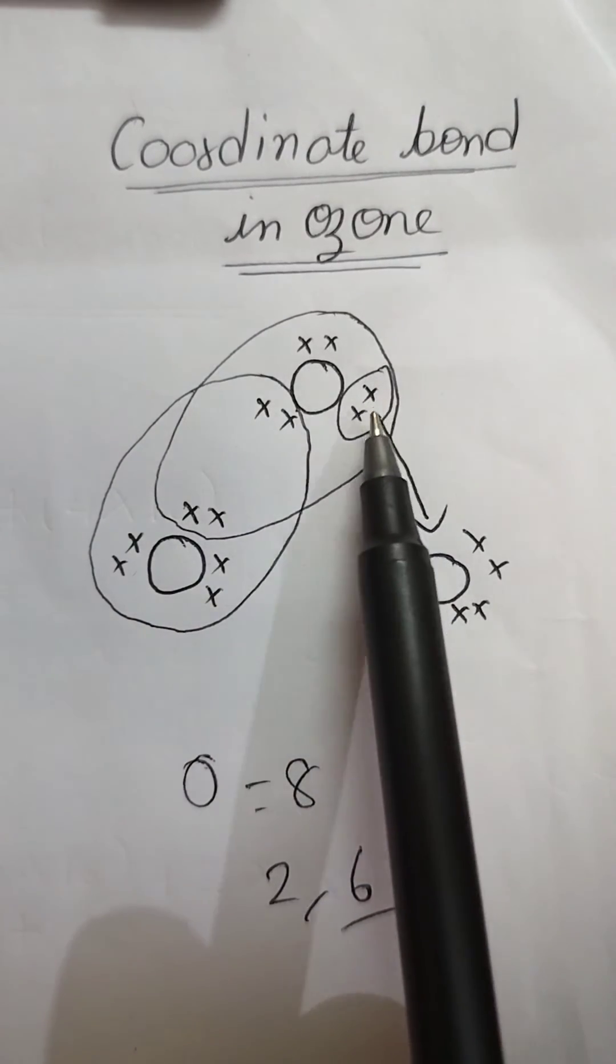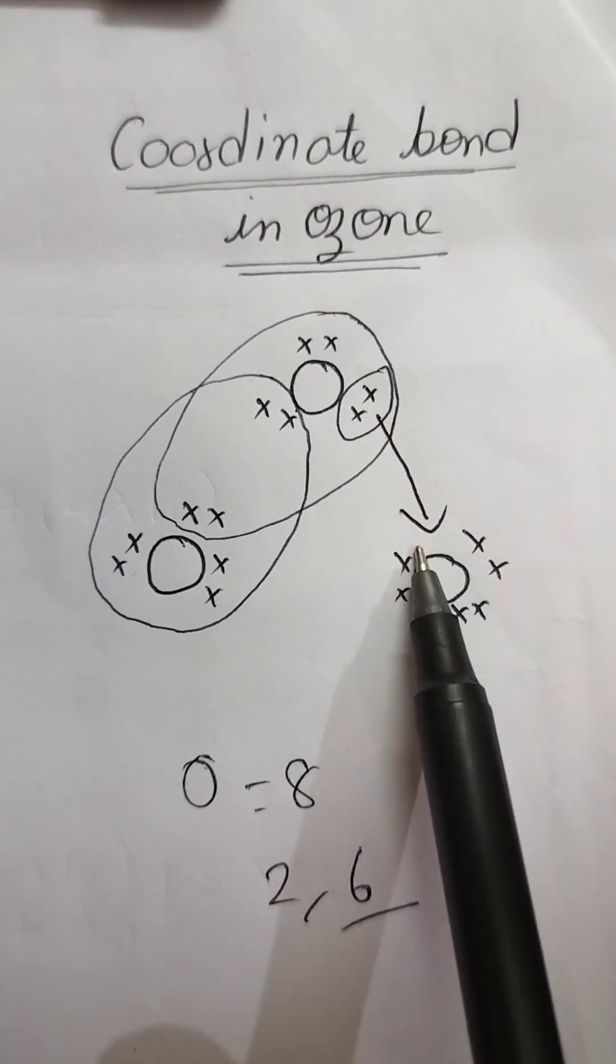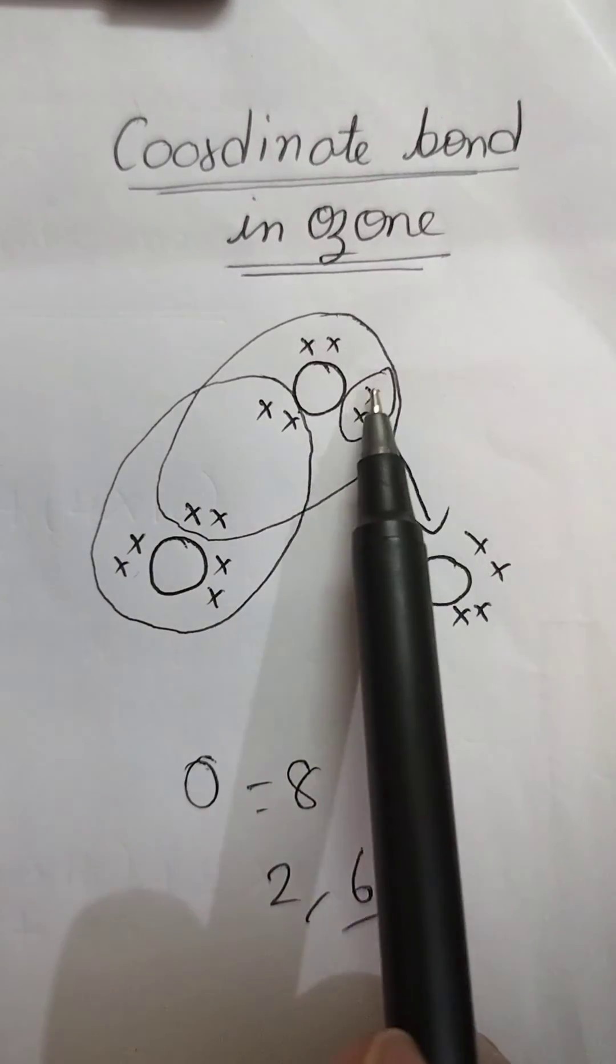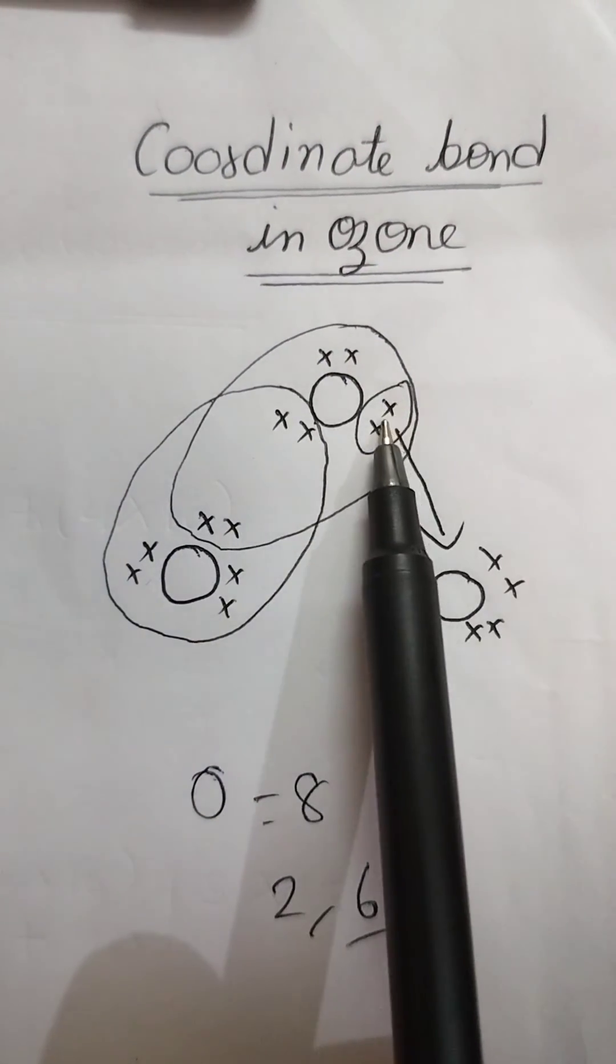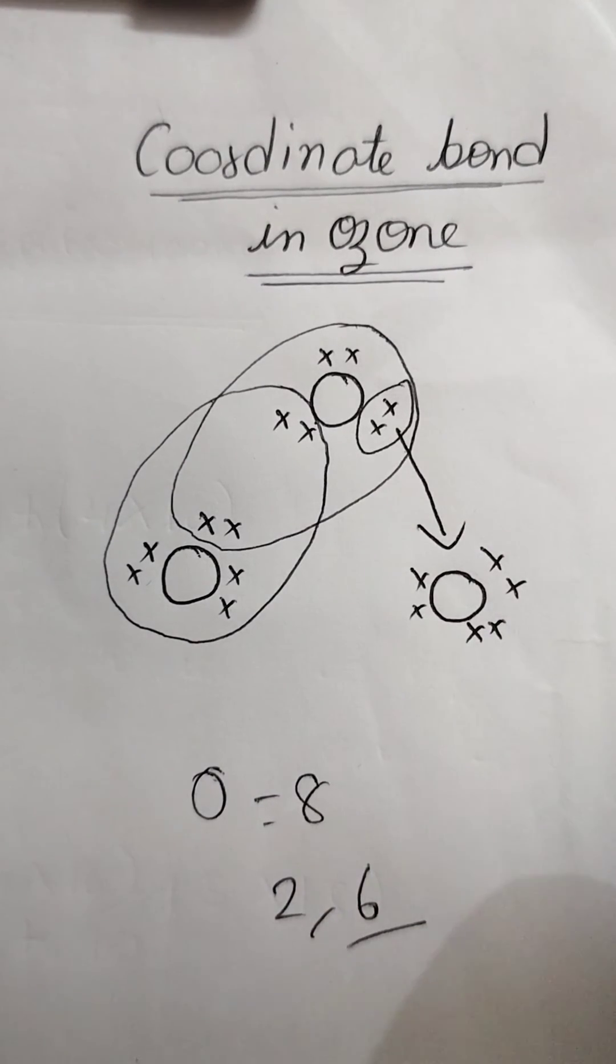So this oxygen or this oxygen will share one pair of electrons with the other oxygen. Now this also has eight electrons. And these two electrons are only shared with it. It's not gone from it. It's shared with it. So this is how coordinate bond formation takes place in ozone.